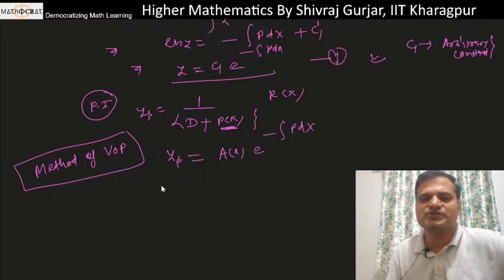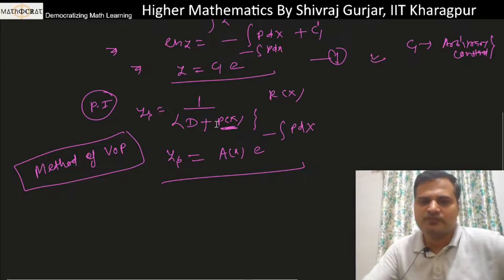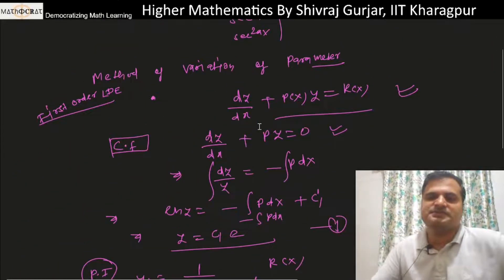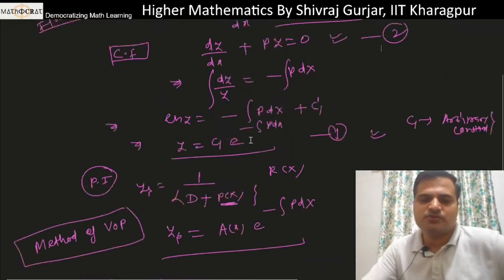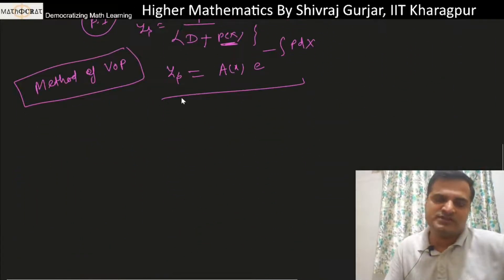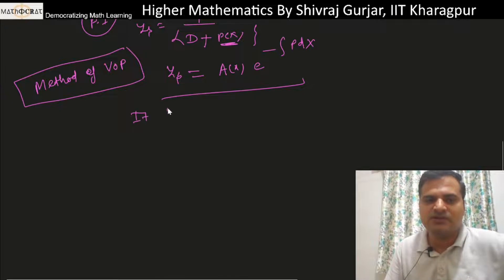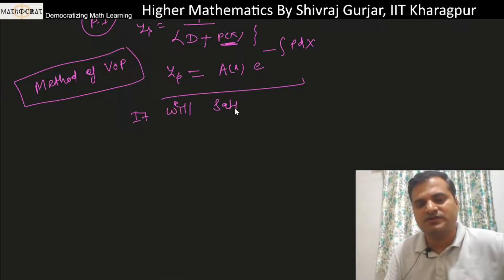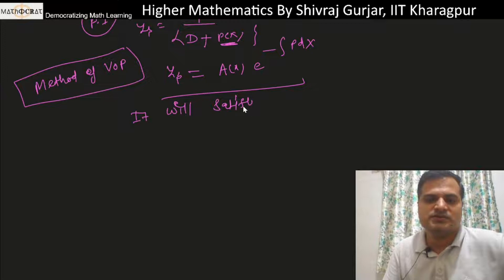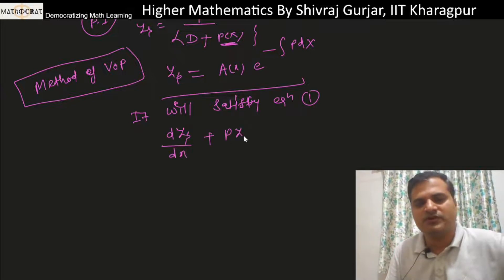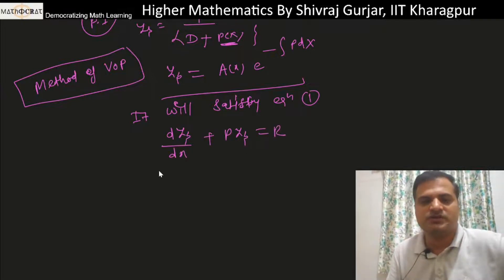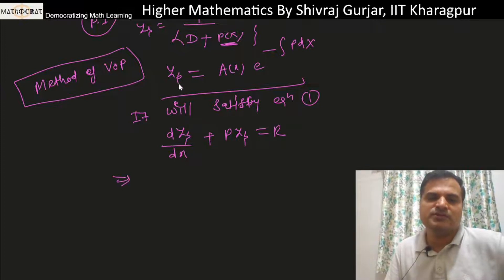We assume the particular solution y_p satisfies equation one, meaning: dy_p/dx + P·y_p = R. We substitute y_p = a(x)·e^(−∫P dx) into this equation and differentiate.